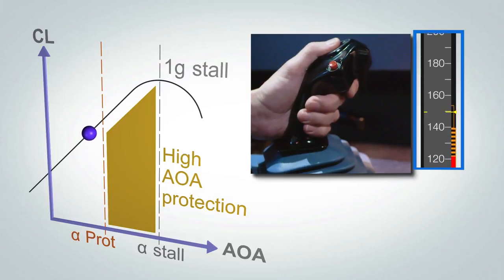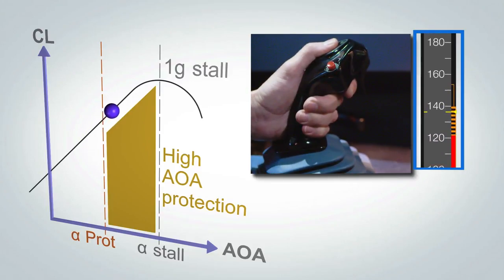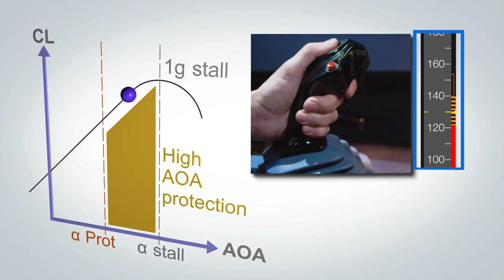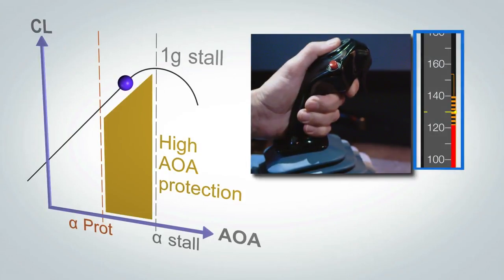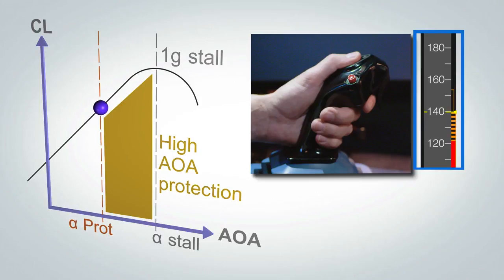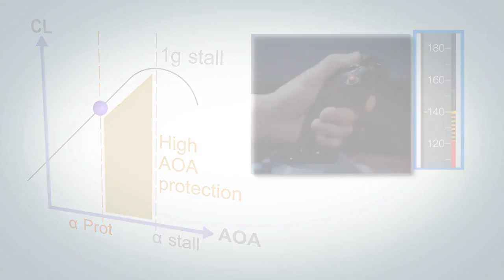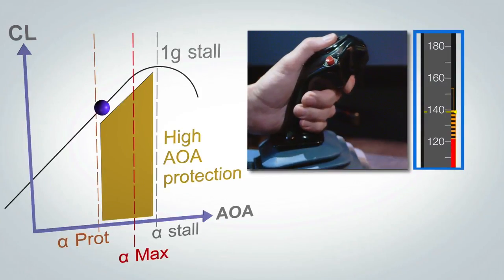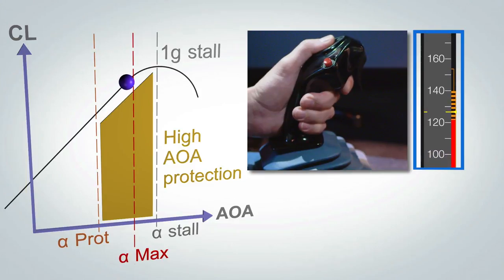Under normal law and in manual flight, when the current angle of attack becomes more than a specific value named alpha prot, the high angle of attack protection activates. Without pilot input, the aircraft will maintain an angle of attack equal to alpha prot. The angle of attack can be increased by pilot input, up to a maximum value equal to alpha max, obtained when the side stick is maintained in the full aft position.